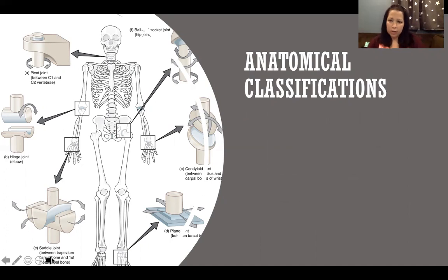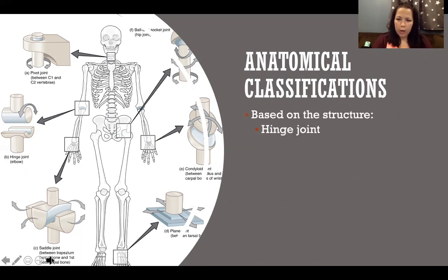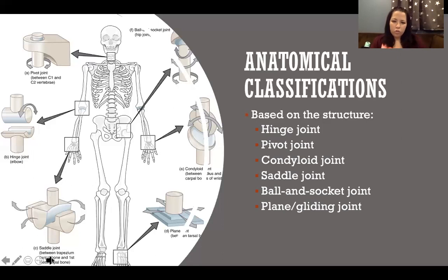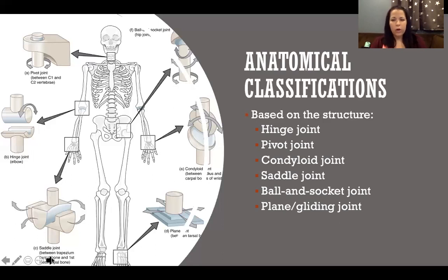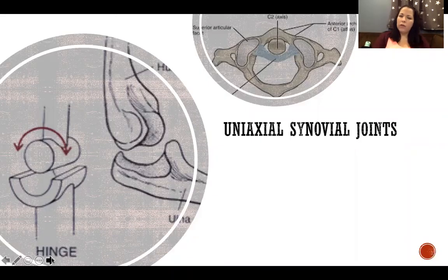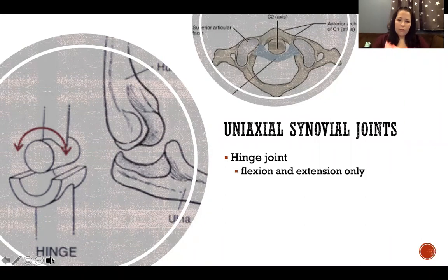For anatomical classification, based on structure, there are six types of synovial joints: hinge, pivot, condyloid, saddle, ball and socket, and plane or gliding joints. Uniaxial joints move in only one plane around one axis. Hinge joints, like the elbow and knee, are only capable of flexion and extension.